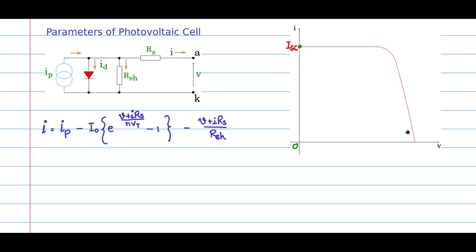Next we shall discuss the second important significant point in the IV characteristic, which is around this point, and we will call that as Voc — the open circuit voltage or the open circuit point. This is the next important operating point. Note that at this point the current is zero, and the voltage obtained here is the open circuit voltage, which means nothing is connected in the external circuit and there is no current flowing — implying an open circuit character of the PV cell.